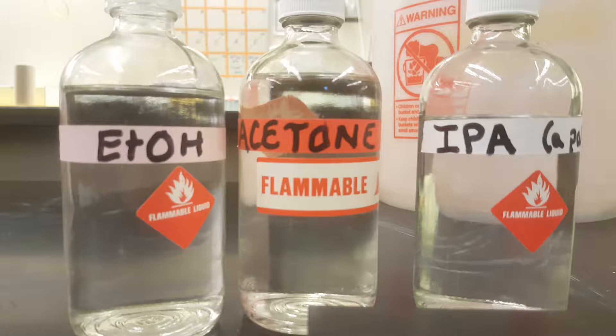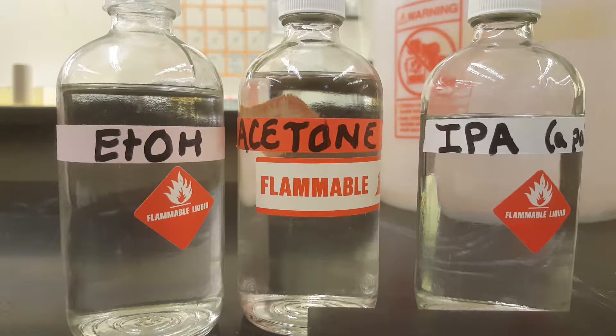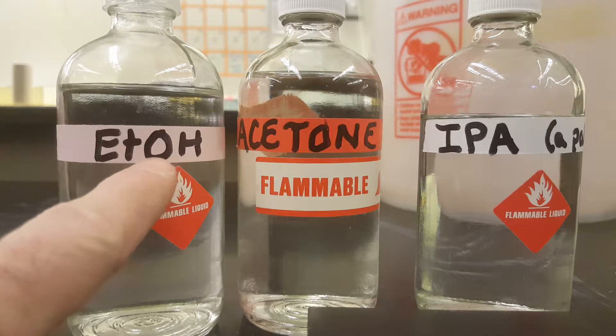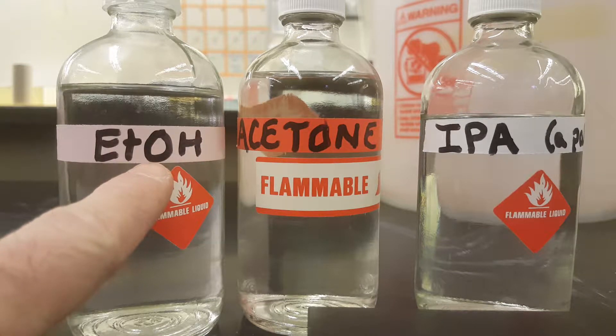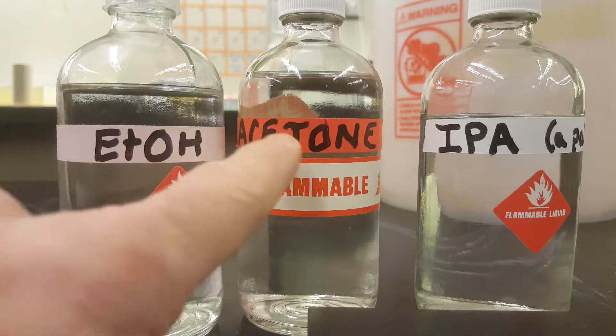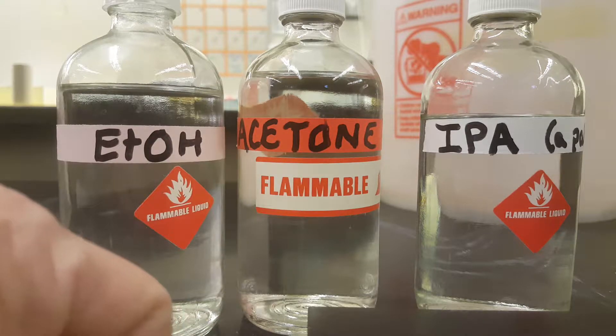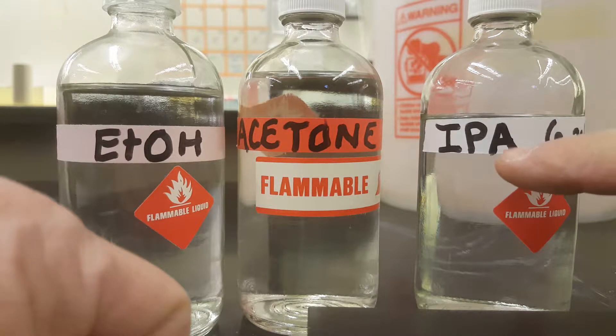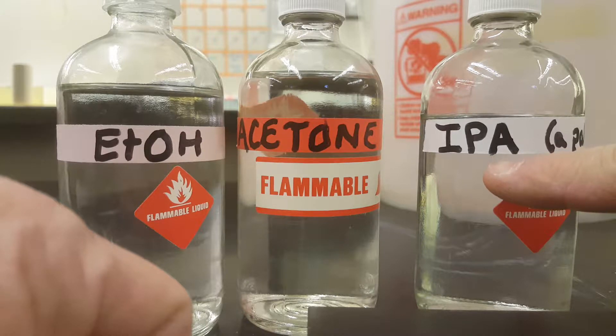These are your three volatile liquids today. And I just want you to make a note that ETOH is the shorthand for ethanol and of course acetone. And isopropyl alcohol is your IPA.